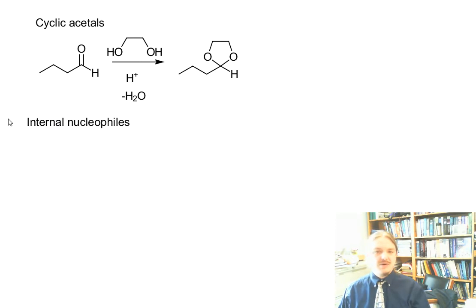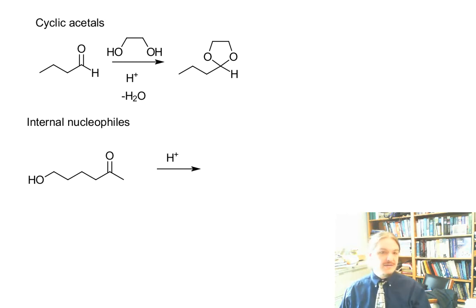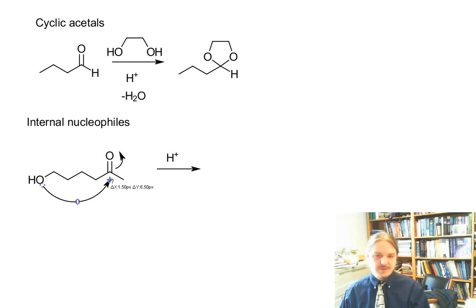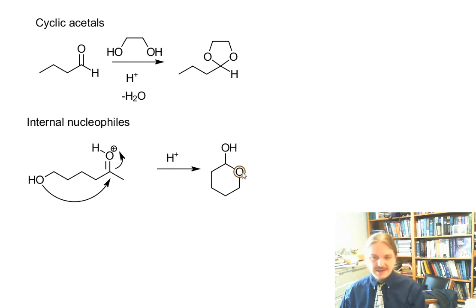The last case I want to talk about is internal nucleophiles. These are cases where you have a carbonyl group and an alcohol somewhere in the same molecule. In this case, you don't need to add anything else — well, you need to add acid — but the nucleophile and the carbonyl group are in the same structure. Once we protonate our ketone, we can count one, two, three, four, five, six — there are six atoms, oxygen through the carbons. Because the nucleophile and the electrophile are actually in the same ring, we are forming a cyclic hemiacetal.